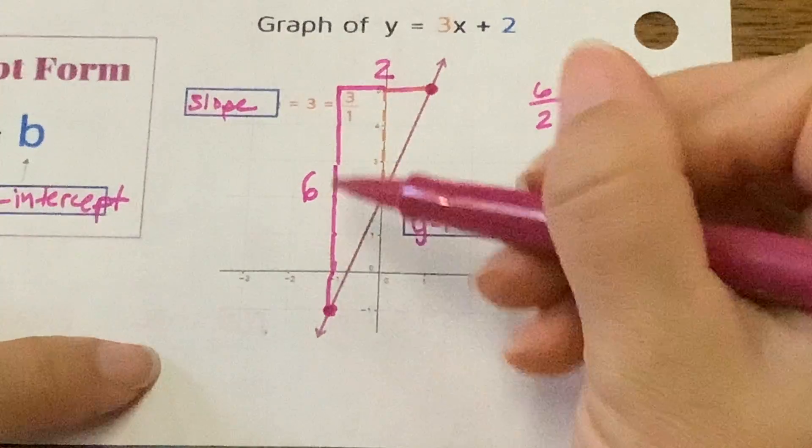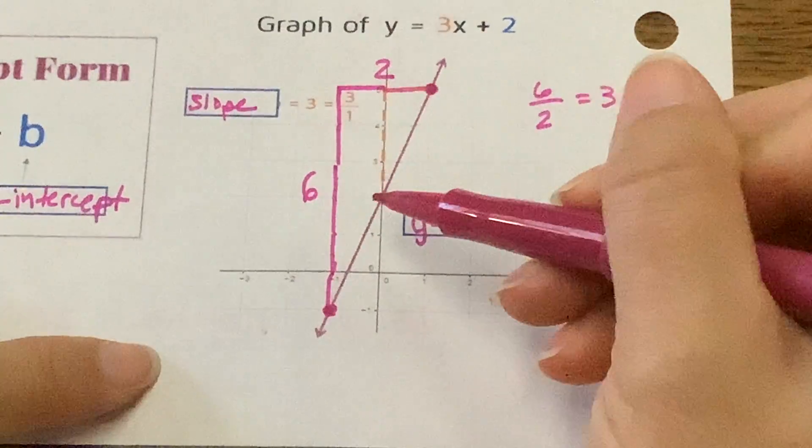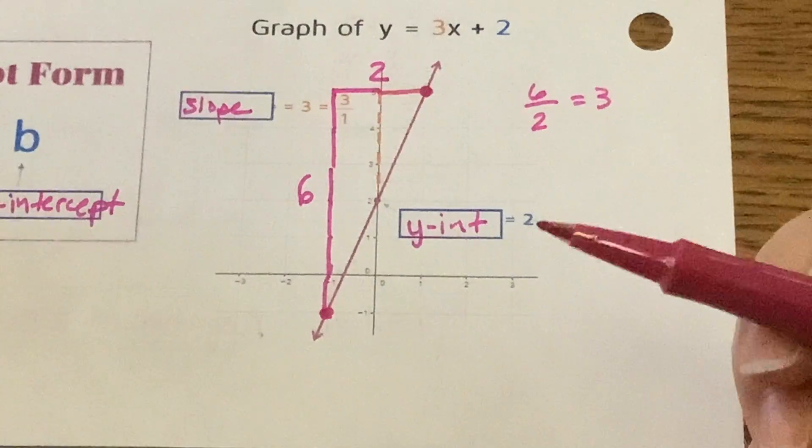So they're going to all be proportional. So we have a triangle here for 6-2, and then we have a triangle here for 3-1. But they're similar triangles.